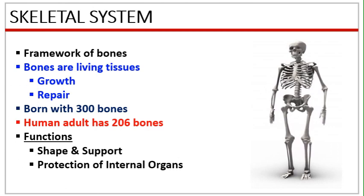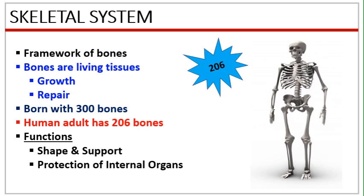The skeletal system is a framework of bones. Bones are made up of living tissues so they can grow and can repair themselves. We are born with about 300 bones. As we grow some of these bones fuse together, and as an adult we are left with 206 bones. The skeletal system performs two major functions: it provides shape and support to our body, and secondly it protects the soft internal organs of the body.